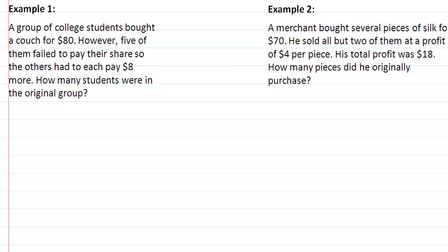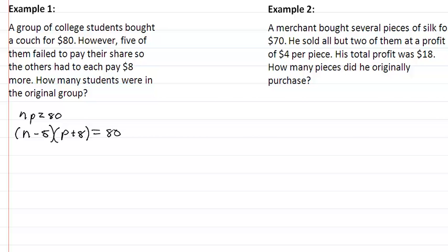In our first example, a group of college students bought a couch for eighty dollars. So we have the number of students times the price they were each going to pay equals eighty. However, five of them failed to pay, so the number goes down by five, and then they had to pay eight dollars more, so the price goes up by eight.